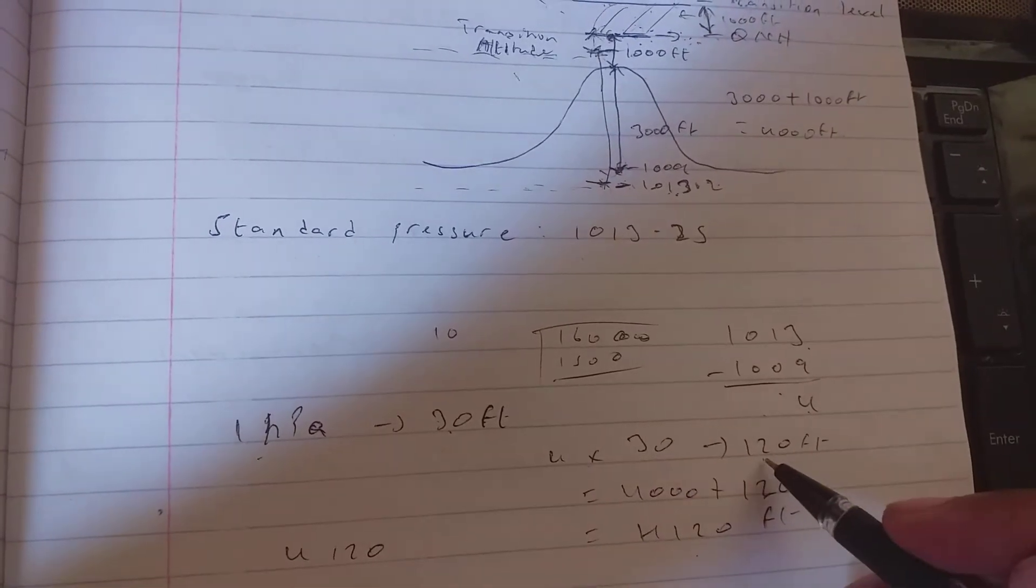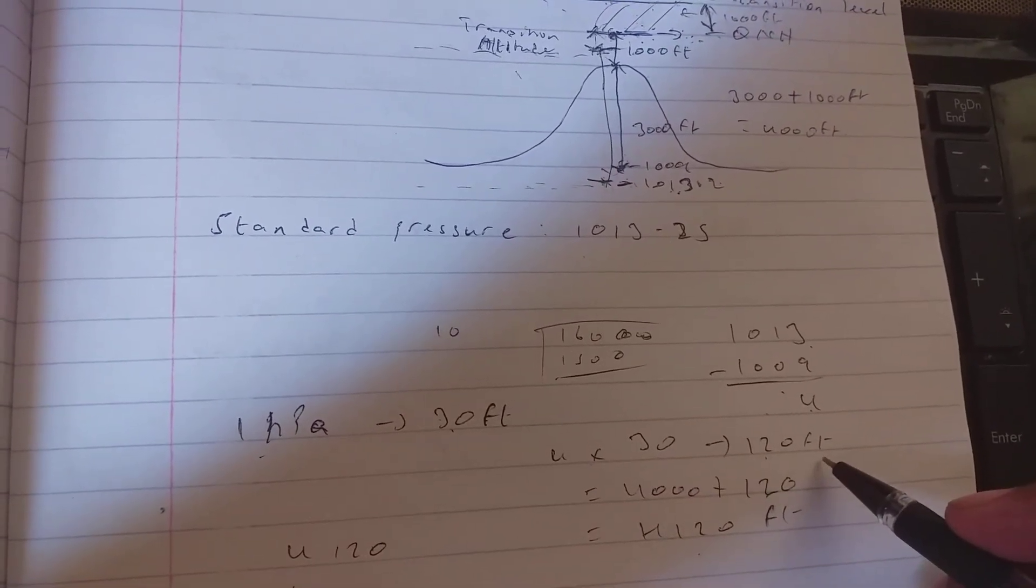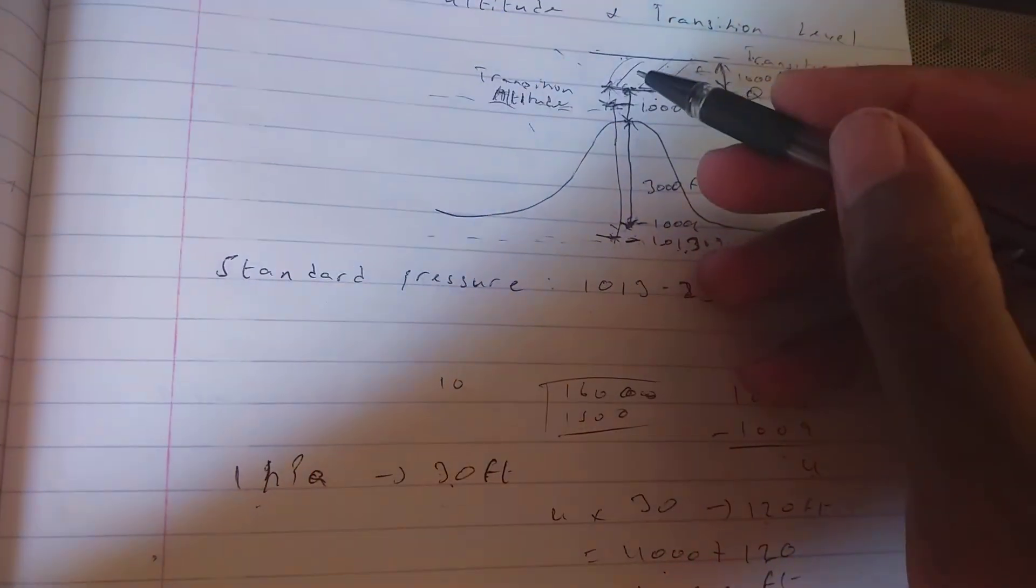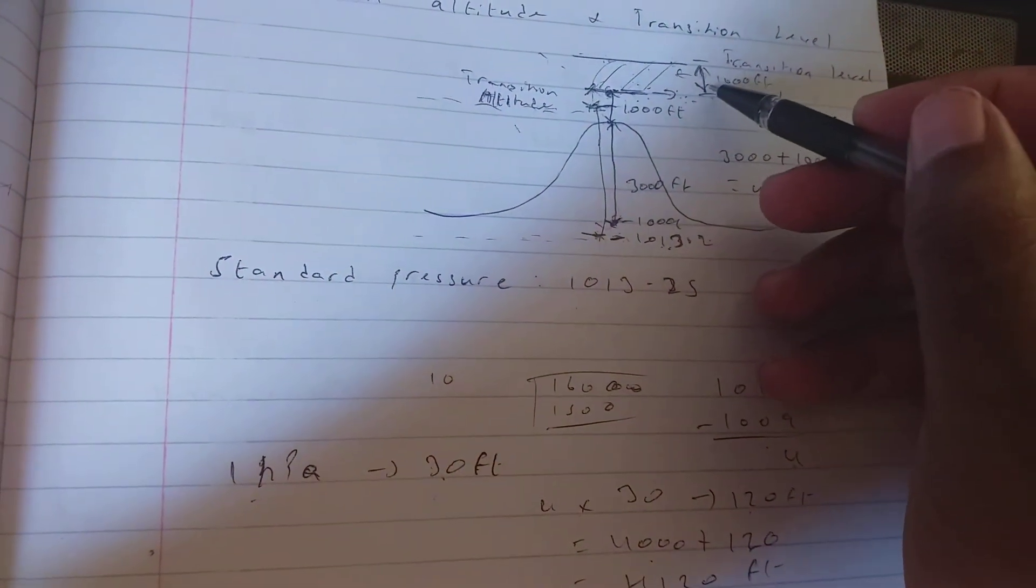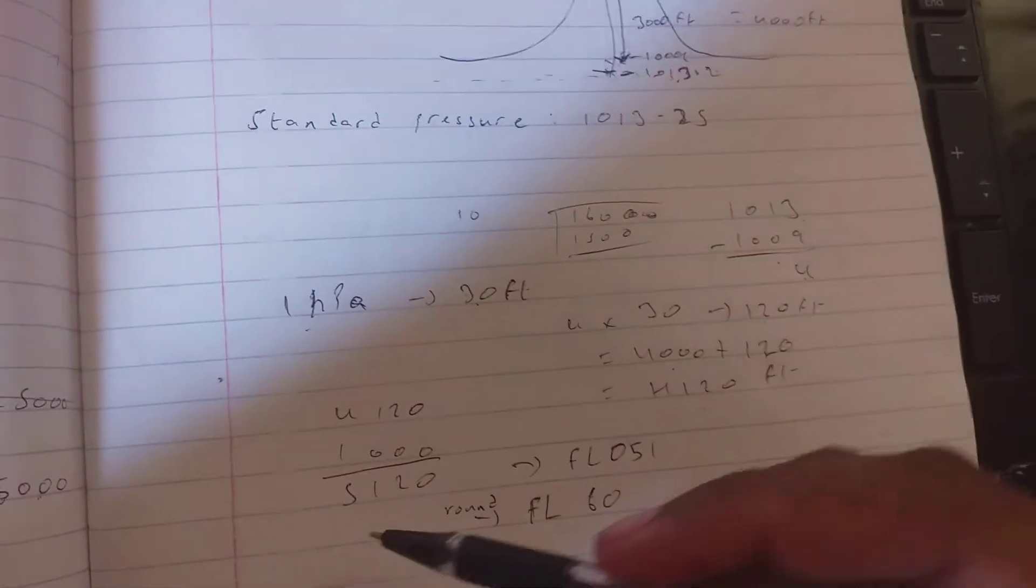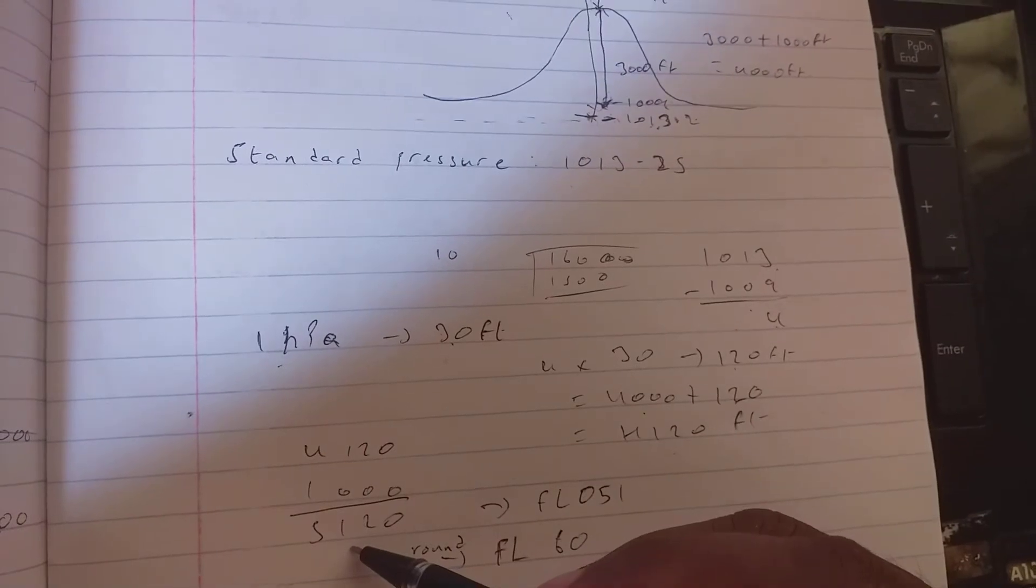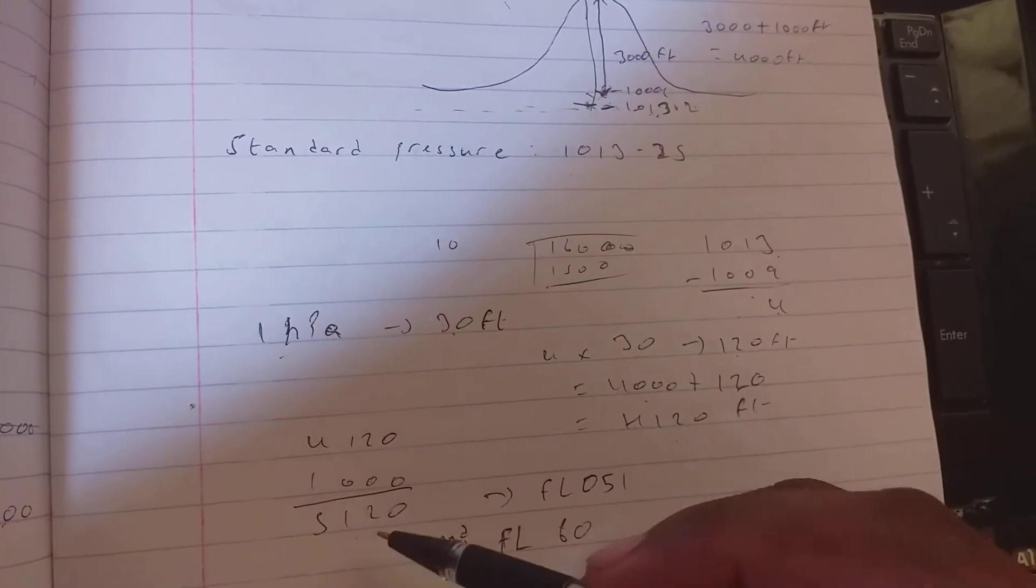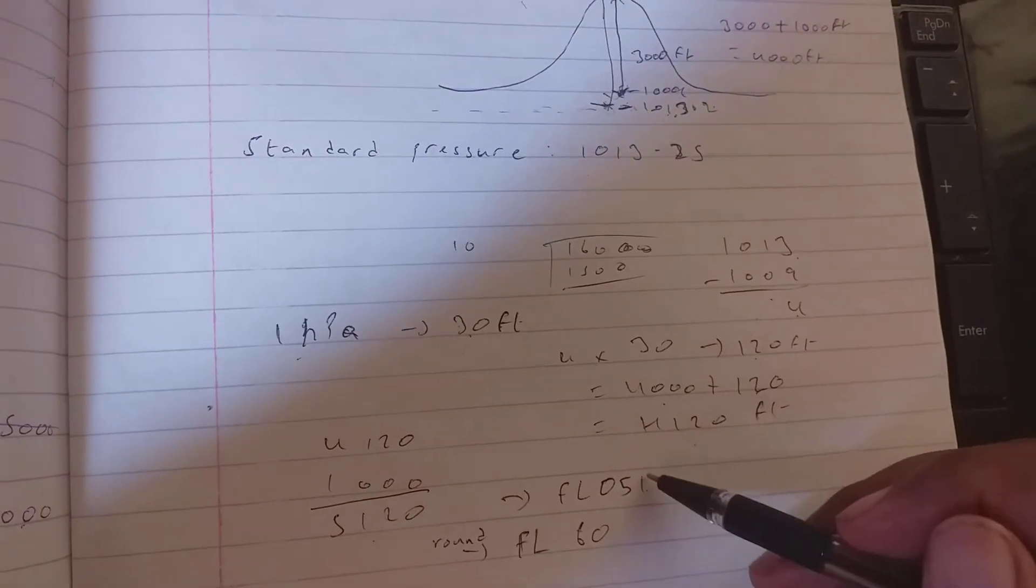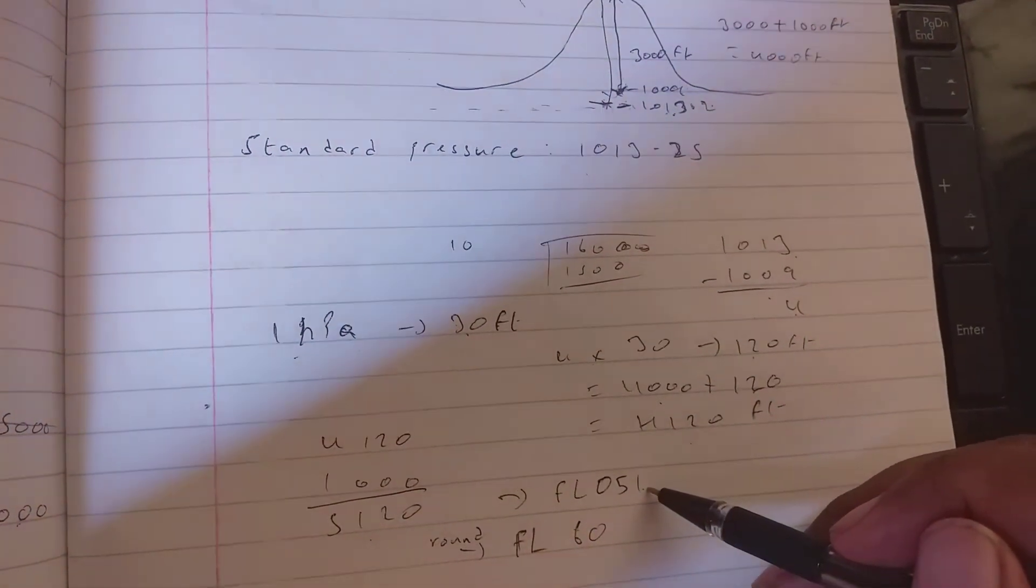We add that 120 feet plus the 1,000 feet correction, and we will get the transition level. But now we must round it to a specific value.